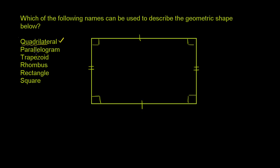We have to think about whether it is a parallelogram. A parallelogram is a quadrilateral that has two pairs of parallel sides, where in each pair there are opposite sides. If you look at this side over here, it forms a 90-degree angle with this line. And this side over here also forms a 90-degree angle with this line over here. So these two sides are parallel. And you can make the exact same argument for the other two sides.